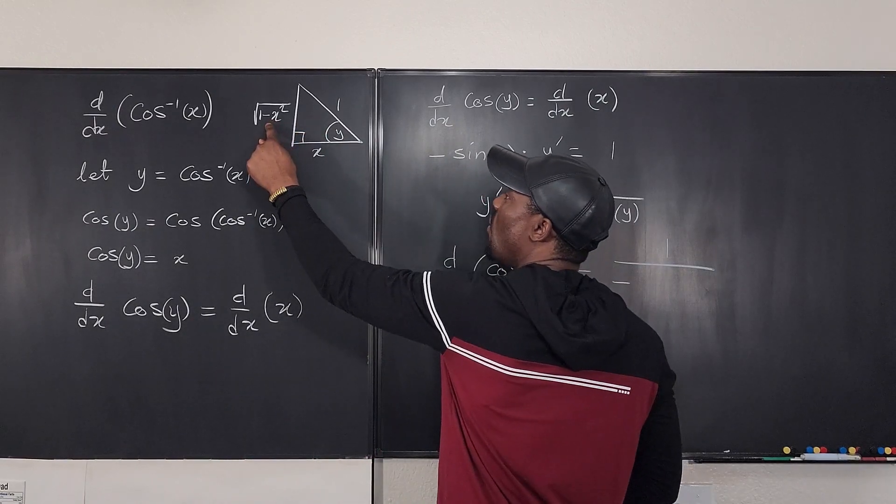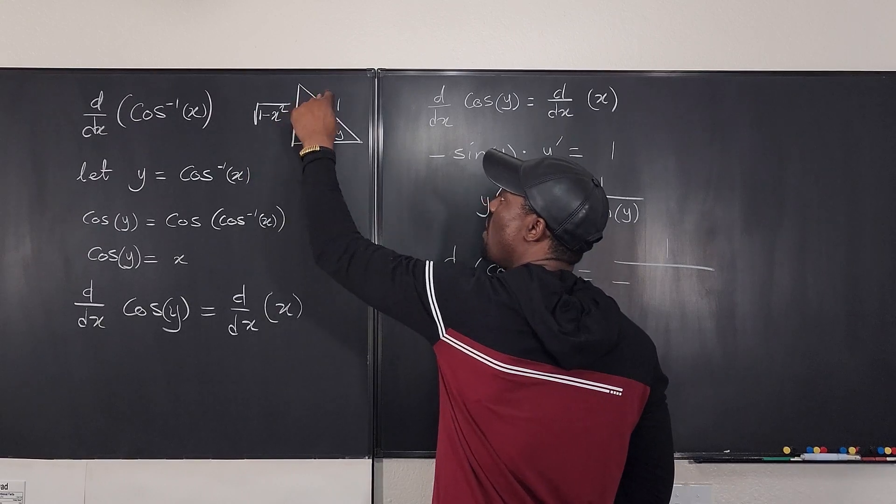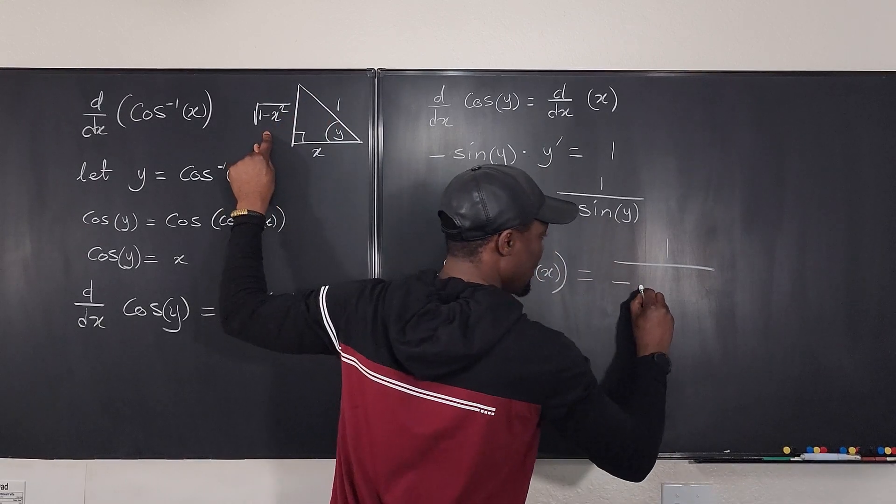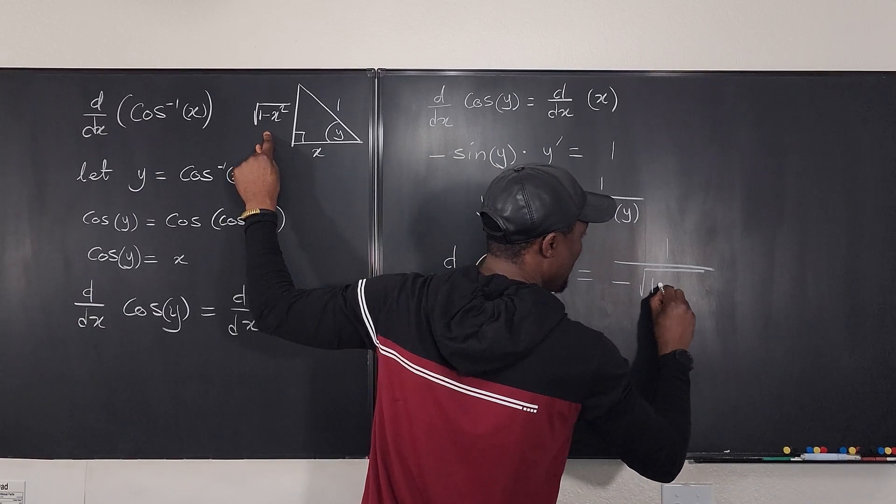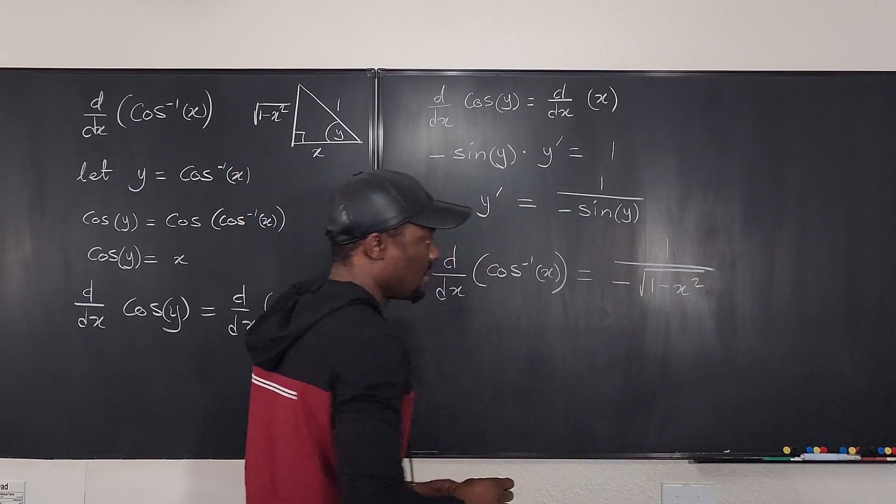It's opposite over hypotenuse. So it's going to be this over one, which is just this. So we're going to write the square root of one minus x squared.